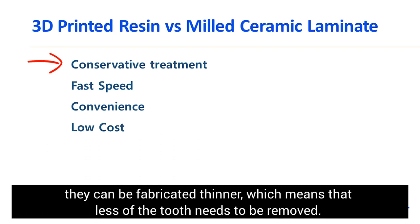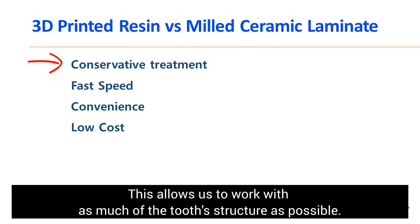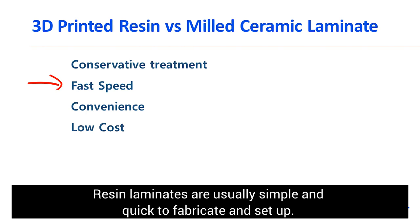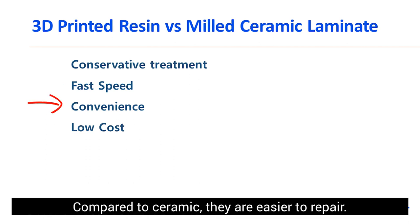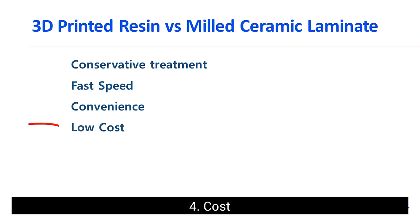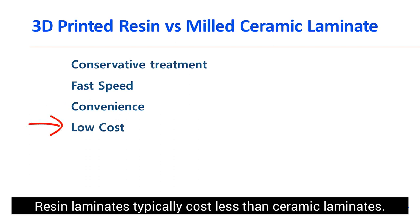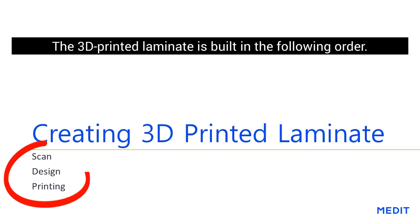Compared to ceramic laminates, resin laminates have the following characteristics. First, conservative treatment: they can be fabricated thinner, which means less of the tooth needs to be removed, allowing us to preserve as much tooth structure as possible. Second, speed: resin laminates are usually simple and quick to fabricate and set up. Third, convenience: compared to ceramic, they are easier to repair. Fourth, cost: resin laminates typically cost less than ceramic laminates.